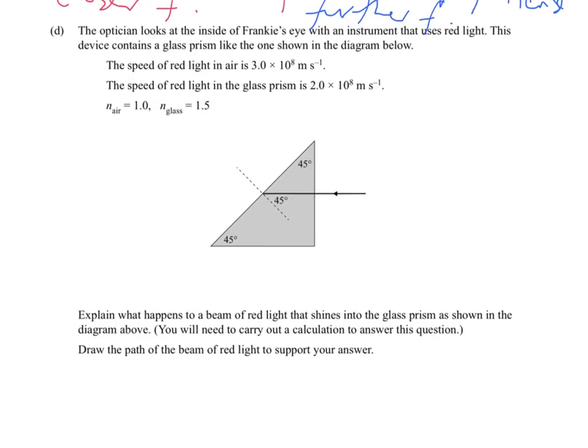Part D. The optician looks at the inside of Frankie's eye with an instrument that uses red light. This device contains a glass prism like the one shown in the diagram below. The speed of red light in air is the speed of light in anything. It doesn't matter the color. The speed of red light in the glass prism is there. And we've got the two refractive indexes. Now, the question, after all that mathematical information, says explain what happens to a beam of red light that shines into the glass prism as shown in the diagram above. You will need to carry out a calculation. So you need to carry out a calculation to answer this question. Draw the path of the beam of red light to support your answer.